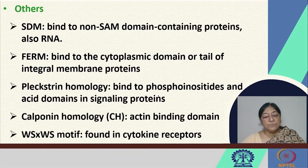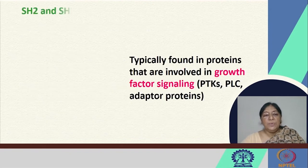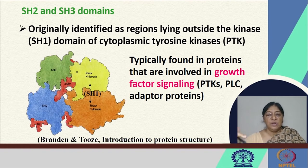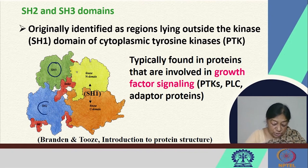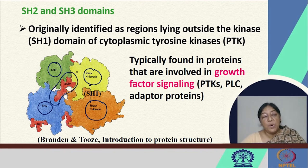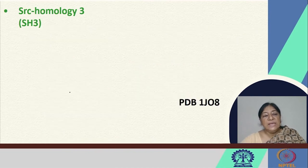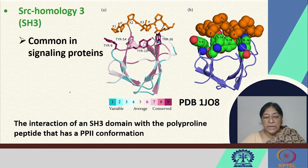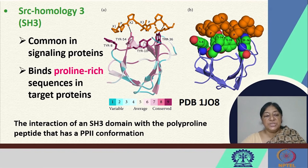There is also a WS motif found in cytokine receptors. The SH2 and SH3 domains were originally identified as regions lying outside the kinase domain of the cytoplasmic tyrosine kinase. Looking at the overall structure typically found in proteins involved in growth factor signaling, we have the SH2 and SH3 domains, and the kinase N domain and kinase C domain connected through a linker. This structure is important in the formation of the specific complex for the necessary action to occur. The SH3 domain recognizes the polyproline peptide; it is common in signaling proteins and binds proline-rich sequences in target proteins in a PP2 conformation.